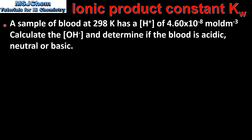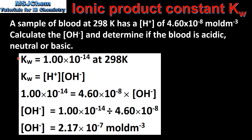Let's end with another example. A sample of blood at 298 K has a concentration of hydrogen ions of 4.60 times 10 to the negative 8 moles per decimeter cubed. Calculate the concentration of the hydroxide ions and determine if the blood is acidic, neutral, or basic. Recall that Kw, the ionic product constant of water, has a value of 1.00 times 10 to the negative 14 at 298 K.